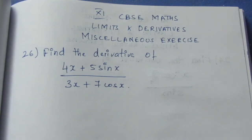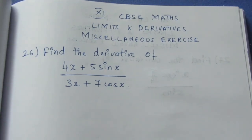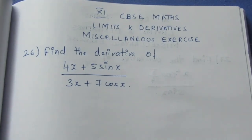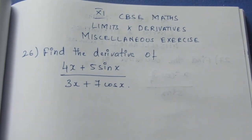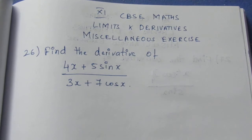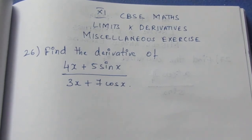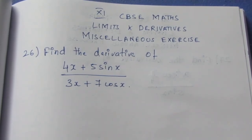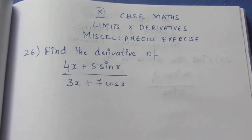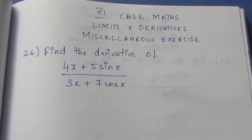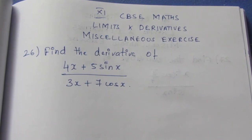Hello viewers, I am Maitli. Today we are going to talk about CBSE limits and derivatives miscellaneous exercise question number 26. Let's find the derivative of (4x + 5sinx) divided by (3x + 7cosx).